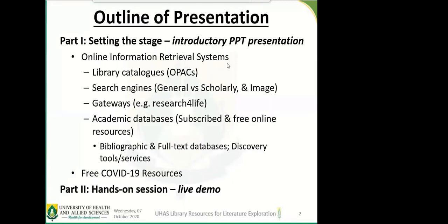That will cover our online public access catalog — the library catalog for print resources. Then we'll also look at some search engines: scholarly search engines versus general search engines. We'll look at Research for Life Gateway, HINARI specifically. We'll also look at some other academic databases, both the ones we have subscribed to as a university and some that are freely available online. Then we'll also look at a particular collection of resources named as discovery tools or databases where you can access full text or bibliographic resources. There are also COVID-19 related resources that publishers have released for free, and I will give you access to some of those links.